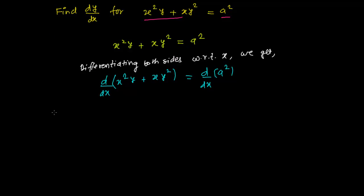In the next step, we can use the sum rule — first find the derivative of x squared y, and then the derivative of x y squared. So we write: d by dx of x squared y, plus d by dx of x y squared.